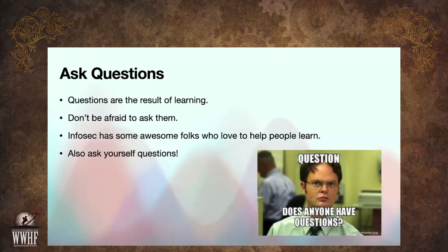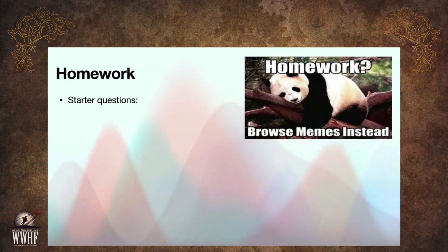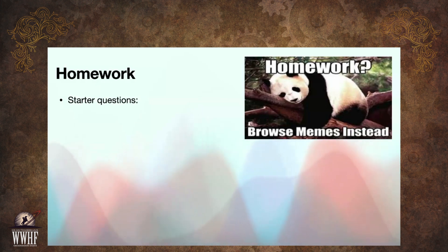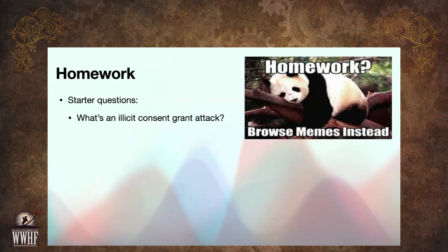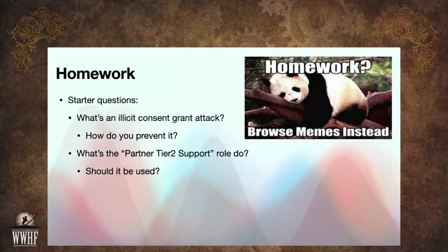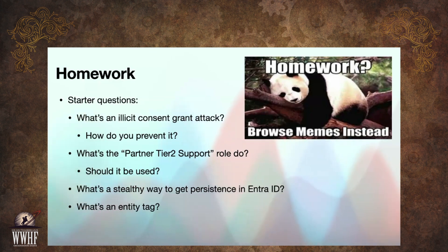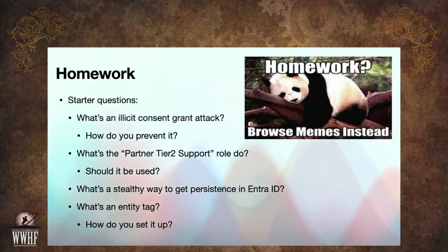Also, ask yourself questions as you're learning — why does this work this way? What happens if I do this? Some homework questions to take home: What's an illicit consent grant attack, and how do we prevent it? What does the partner tier-two support role do, and should it be used? What's a stealthy way to get persistence in Entra ID? What's an entity tag and how do you set it up? These are questions I've had and answered — things that are really helpful to know for Entra ID security.